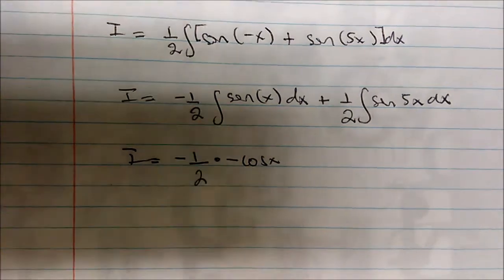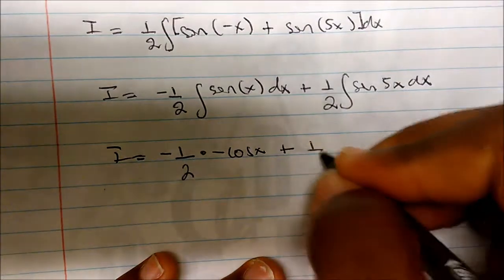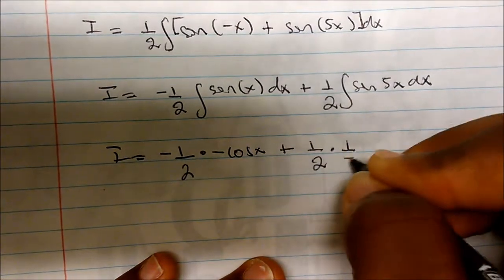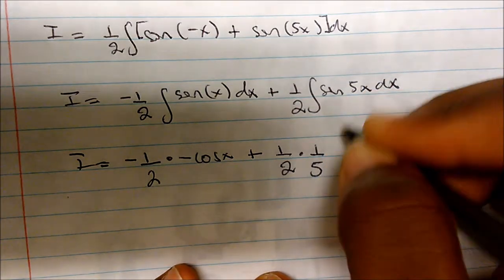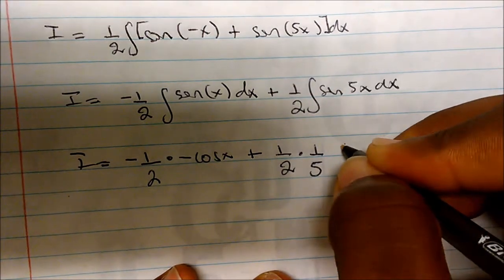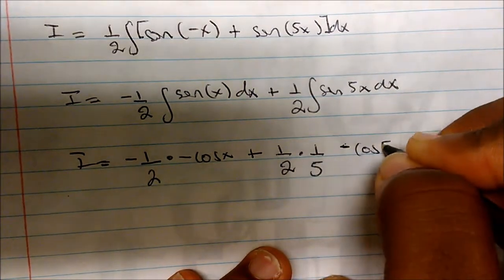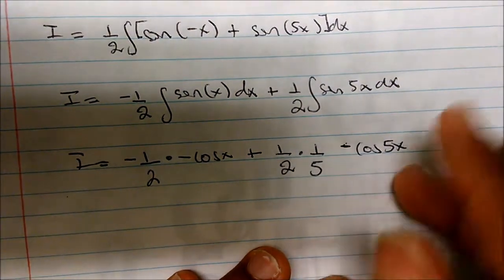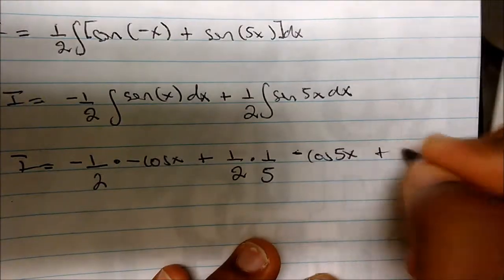So the anti-derivative sine of x is negative cosine of x, plus one half times - well, I have a one fifth here, because the integral of sine fifth of x is actually - we have that to be negative cosine fifth of x. Because we have a five here, we got to multiply that by one fifth plus c.